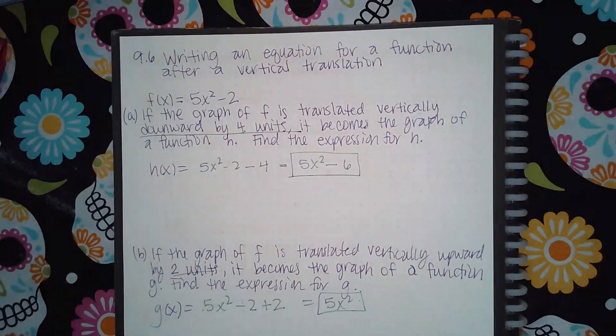So I'm going to take 5x² - 2. But because it's going upward 2 units, I'm going to do plus 2. And if I combine my like terms, I just end up with 5x². And so that's the entire answer for those two.